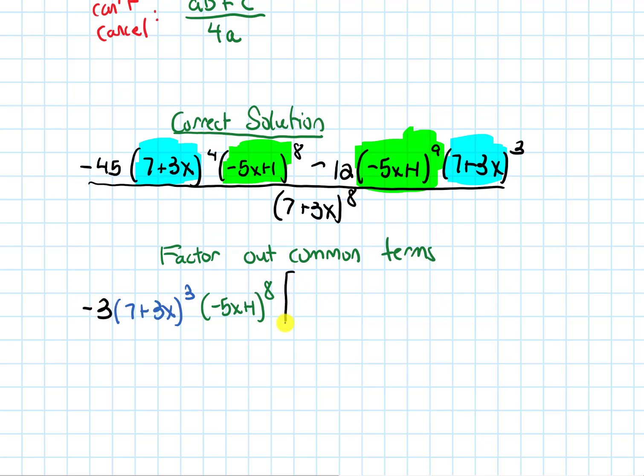Alright, and now I'm going to write everything that's left over in a big old bracket or parentheses. So from this first, from all of this, this whole first term, when I took out a -3 from the -45, I'm left with a 15.